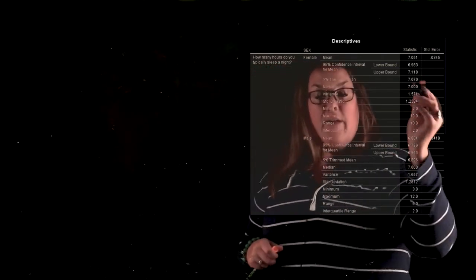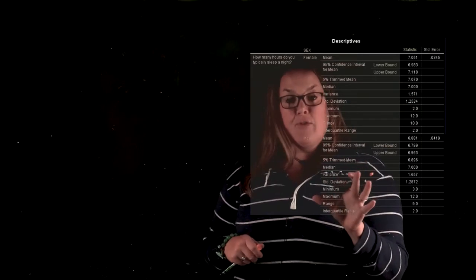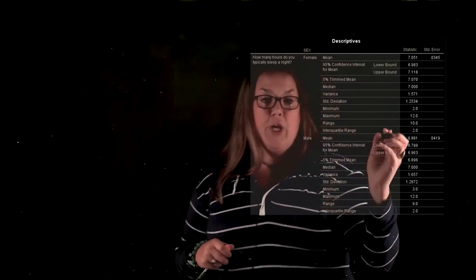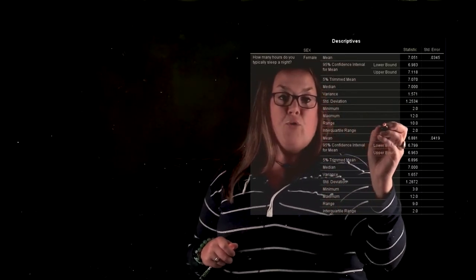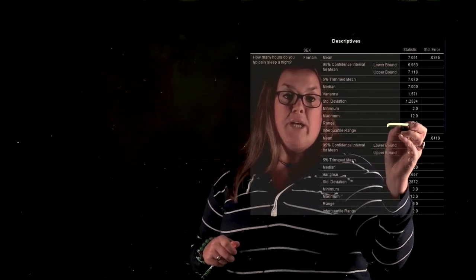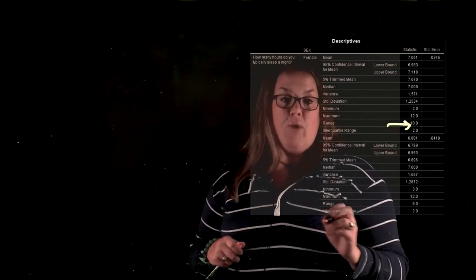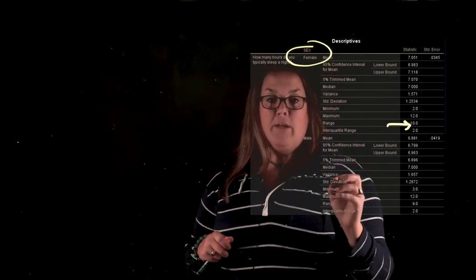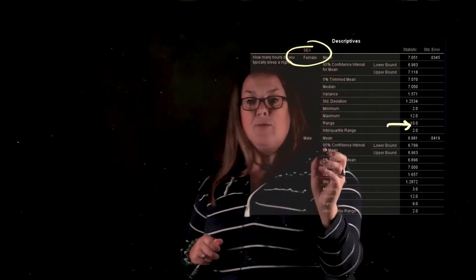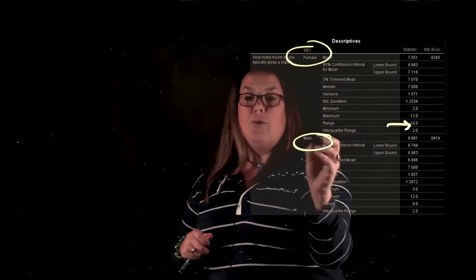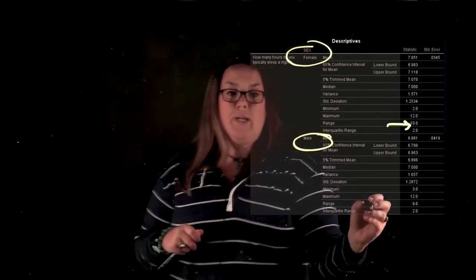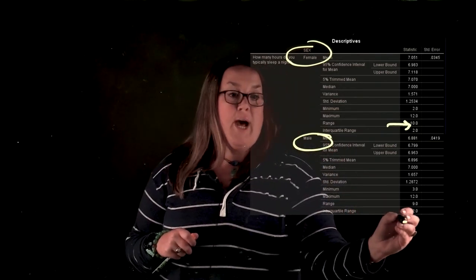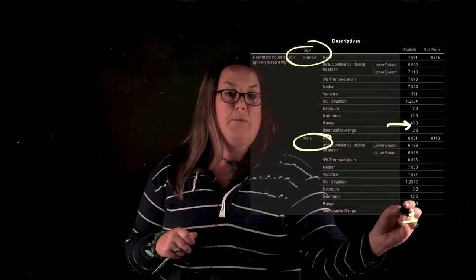However, you will notice that if you have a table that is from some computing package, it will calculate the range for you. So this is for the same data. You can see that it had a range of 10 for the female group, which is what we calculated by hand. And for the male group, we can see that there was a range of nine, which we actually calculated by hand too.